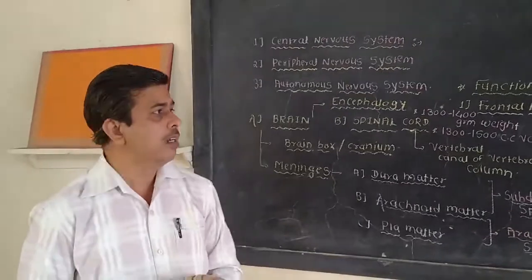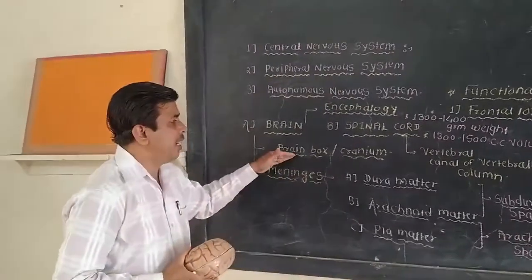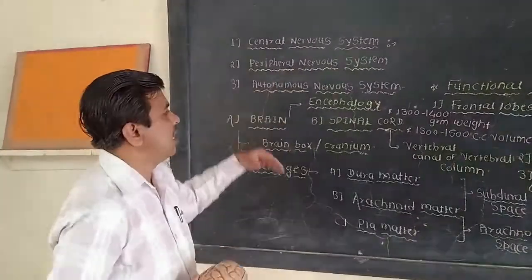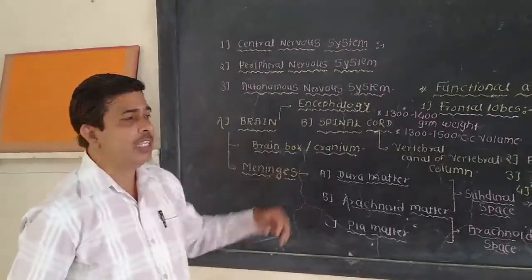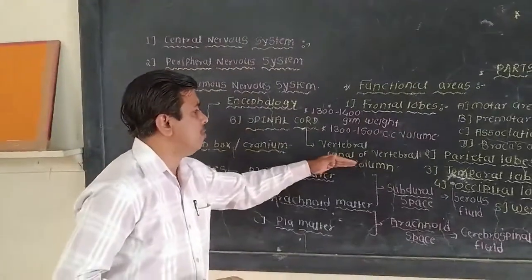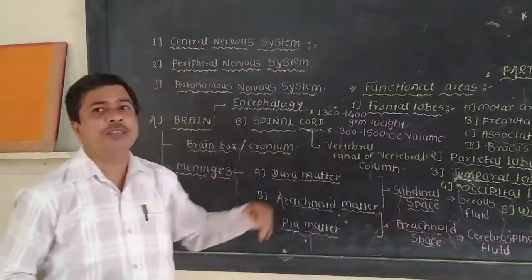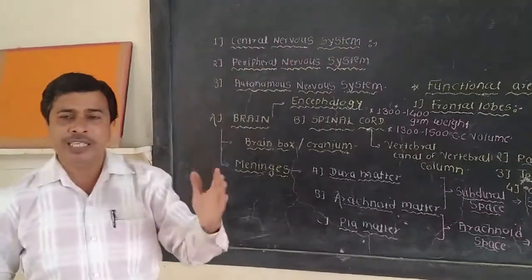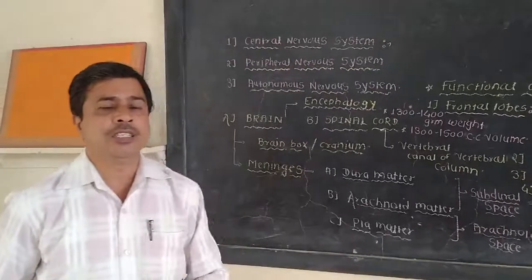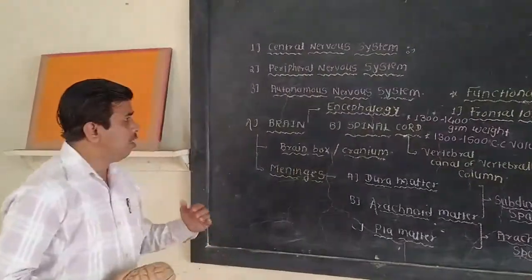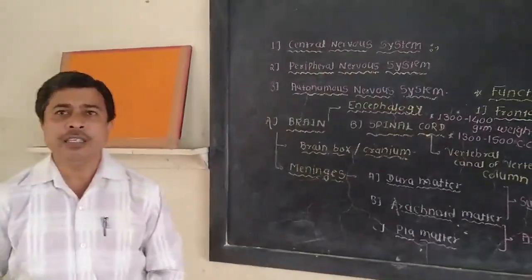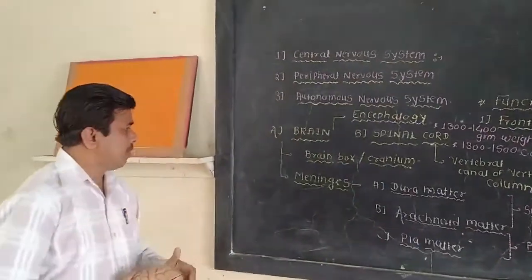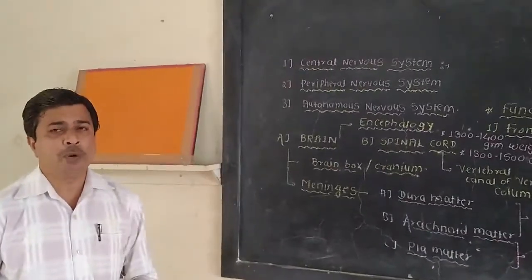The brain is present in the brain box, also known as the cranium. The second part of the central nervous system, the spinal cord, is present in the vertebral canal of the vertebral column. Both are parts of the central nervous system, present along the central axis on the dorsal side of the body. The brain is covered by some protective membranes.